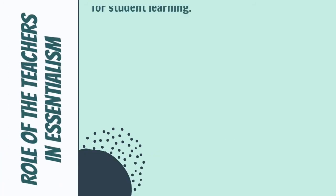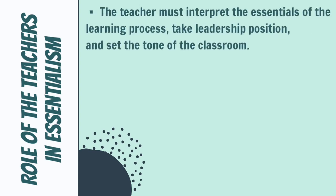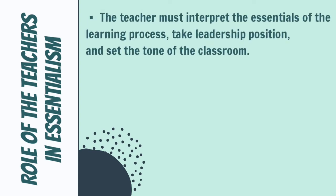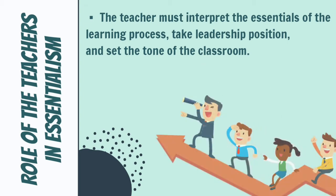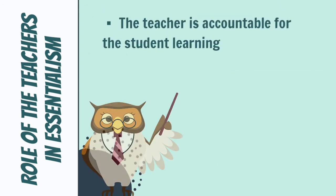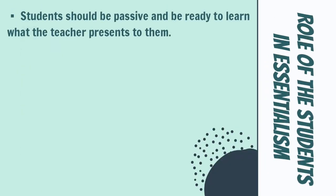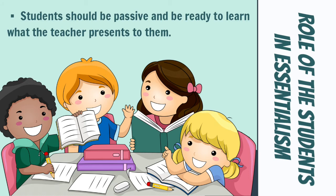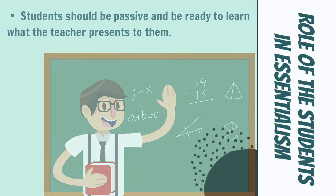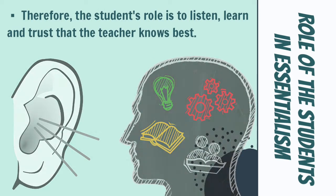Essentialism in the Classroom: Establishing order in the classroom is crucial for student learning. The teacher must interpret the essentials of the learning process, take a leadership position, and set the tone of the classroom. The teacher is accountable for student learning. Students should be passive and ready to learn what the teacher presents. Therefore, the student's role is to listen, learn, and trust that the teacher knows best.